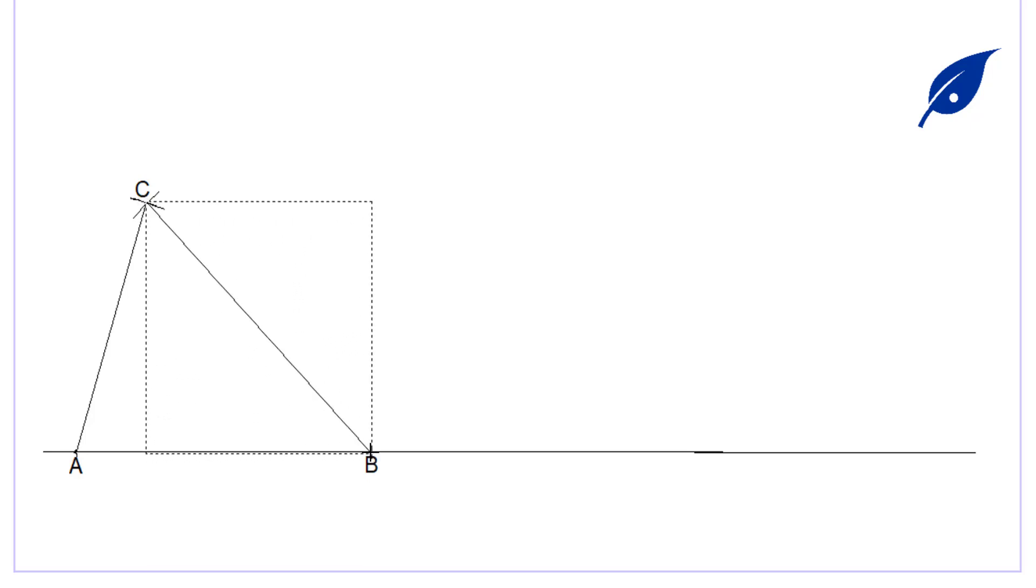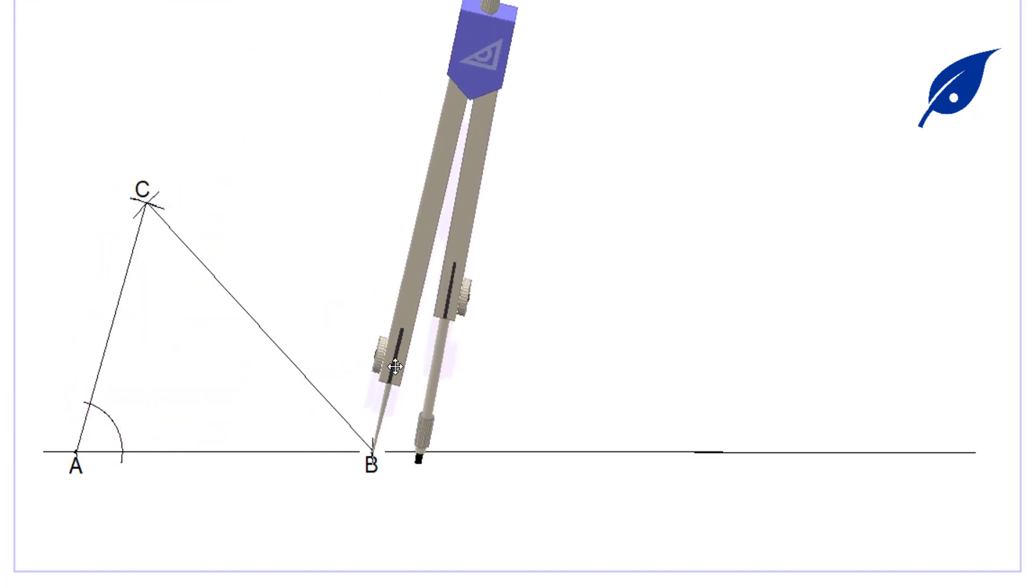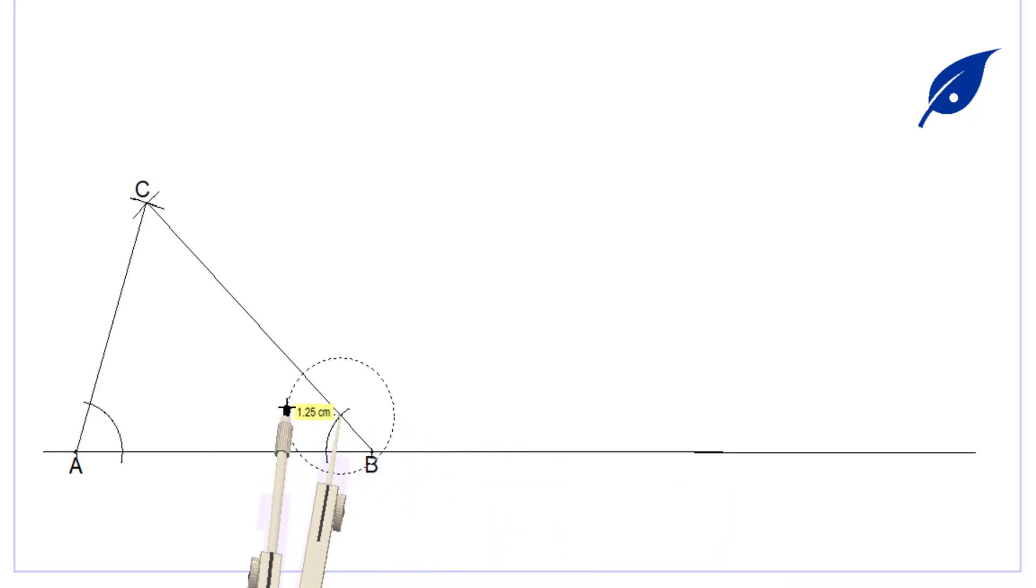After getting triangle ABC as required, the next thing is to bisect the angle at point A and also the angle at point B. For inscribing a circle, that is how to do it—bisecting the angles, not the sides.